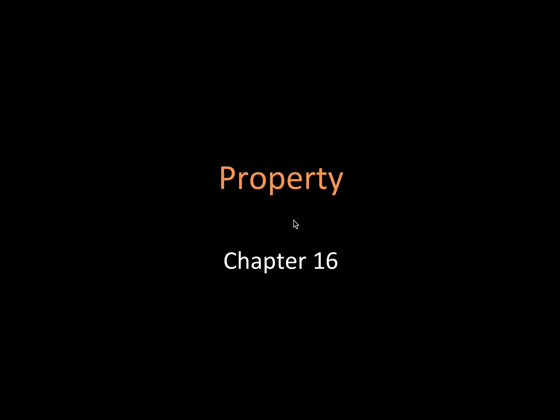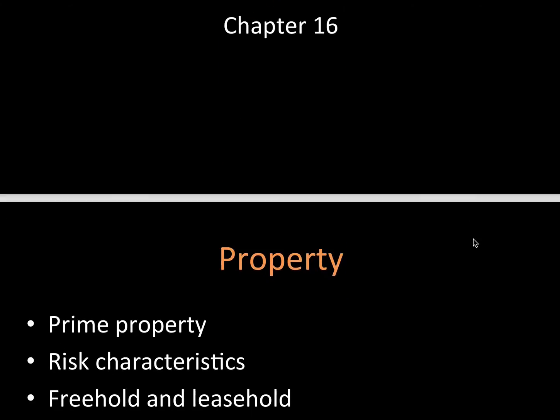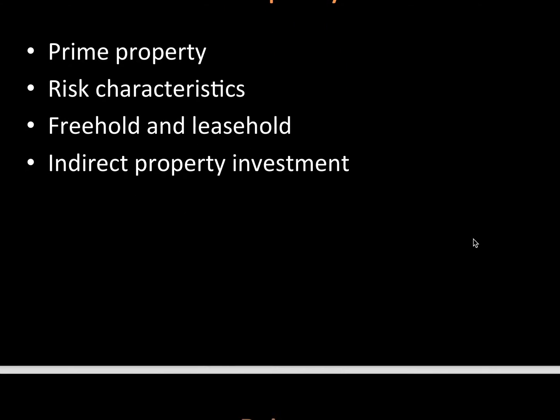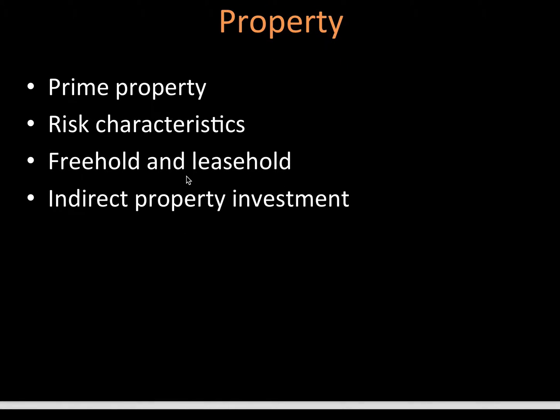Hey guys, it's MJ the student actuary, and today we're going to be talking about chapter 16 in CA1, which is property. Property is an asset class, and we're going to look at: what do we mean when we say a property is prime, the risk characteristics, compare freehold to leasehold, and finally the advantages and disadvantages of investing in property indirectly.